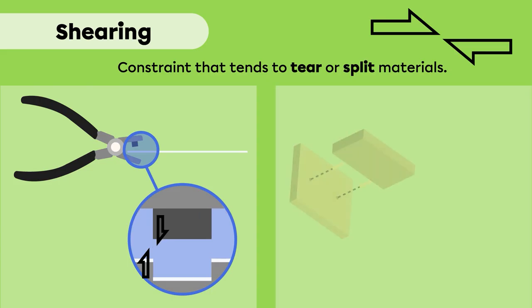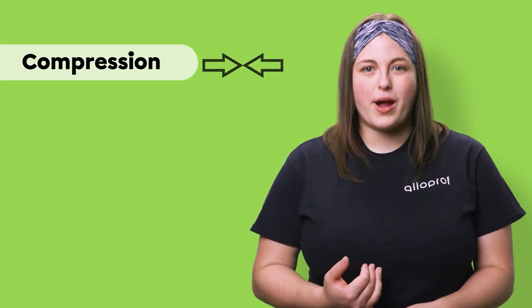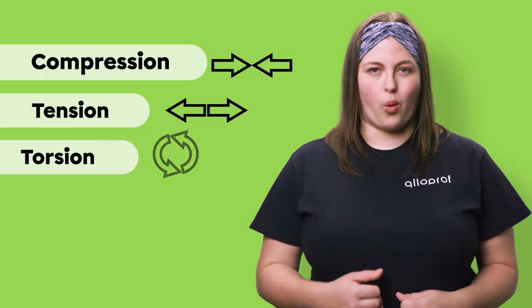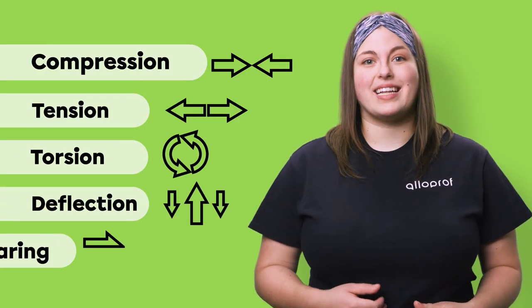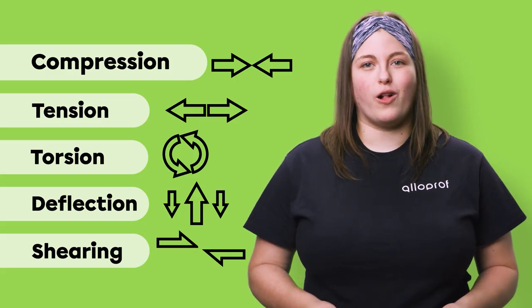This is also the constraint applied to a pin supporting a bookshelf. The weight of the shelf applies a downward force to one half of the pin, while the bracket applies an upward force on the other half. In summary, materials can be subjected to constraints such as compression, tension, torsion, deflection, and shearing. These are represented by large hollowed-out arrows.